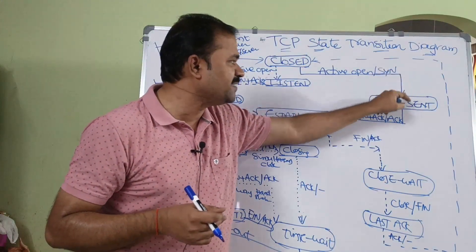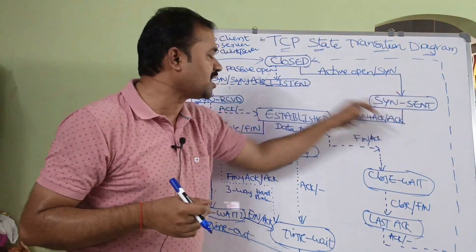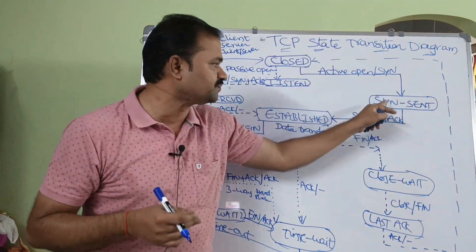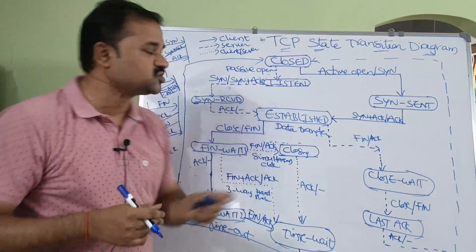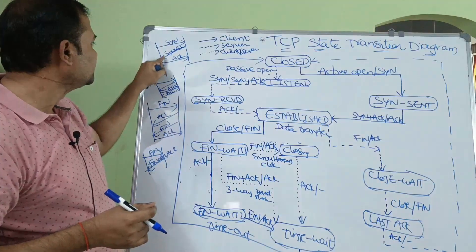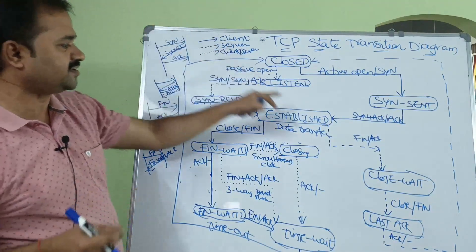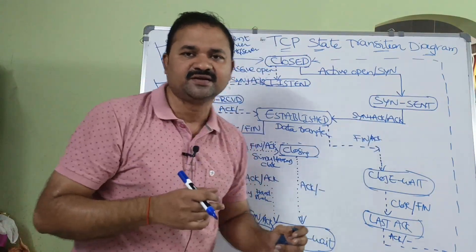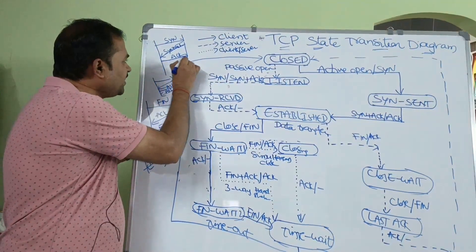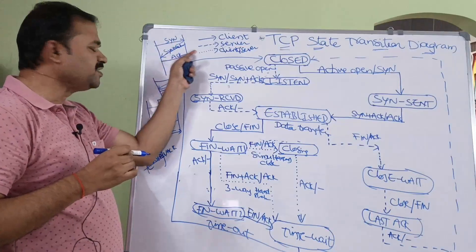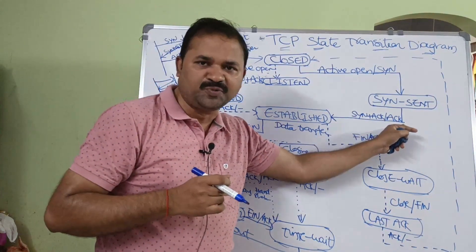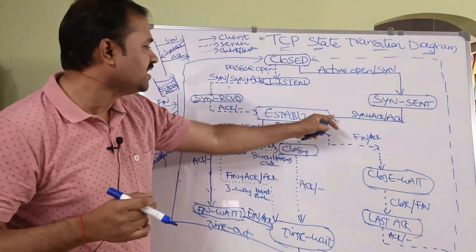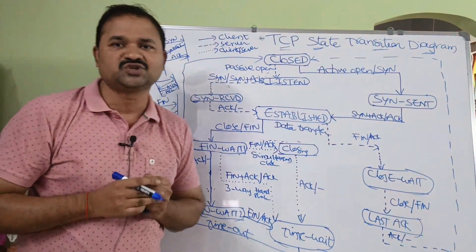The client sends a SYN segment to the server — this is shown by a solid line indicating a client state — and goes into the SYN-sent state. The client then receives SYN plus acknowledgement from the server, which is the input. For that, the client provides acknowledgement as output, and transitions into the established state.